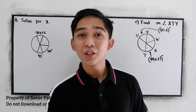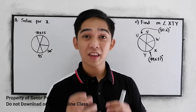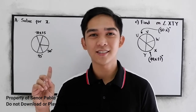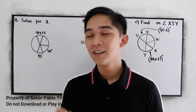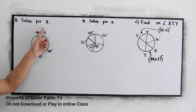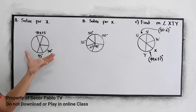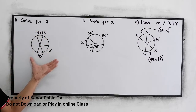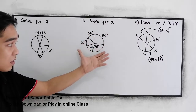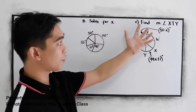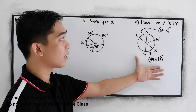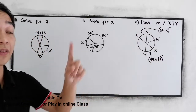To apply the definition of central angles and arcs, let's have the following exercises. We have A, solve for X, with this illustration and the given. And for B, solve for X. And for letter C, this will be the illustration. Let's start with letter A.